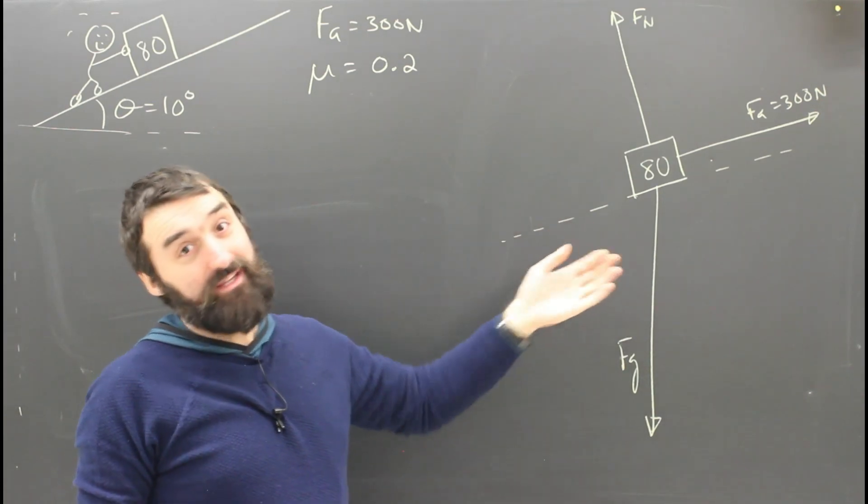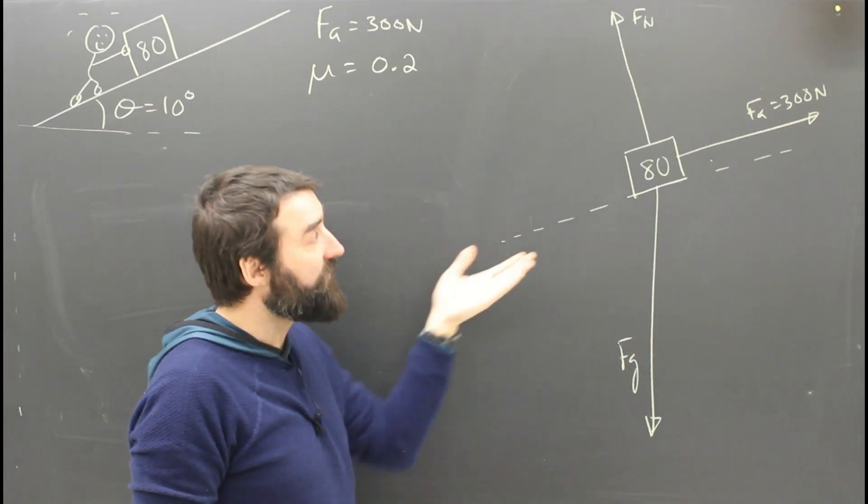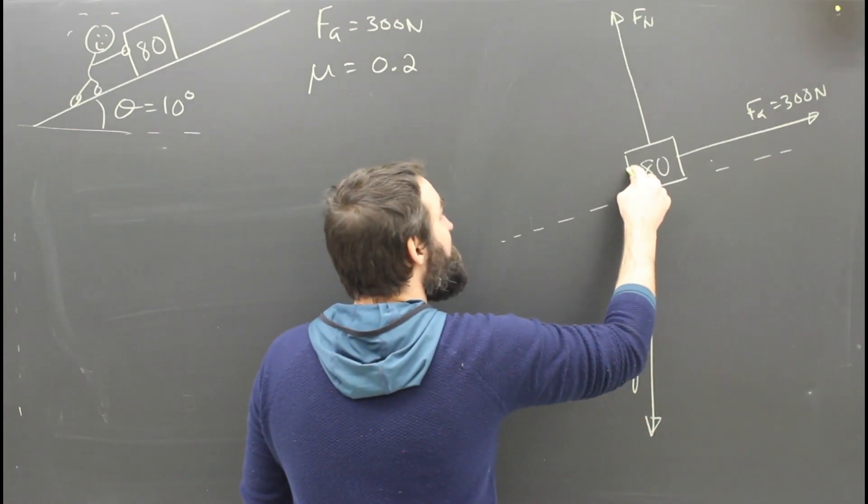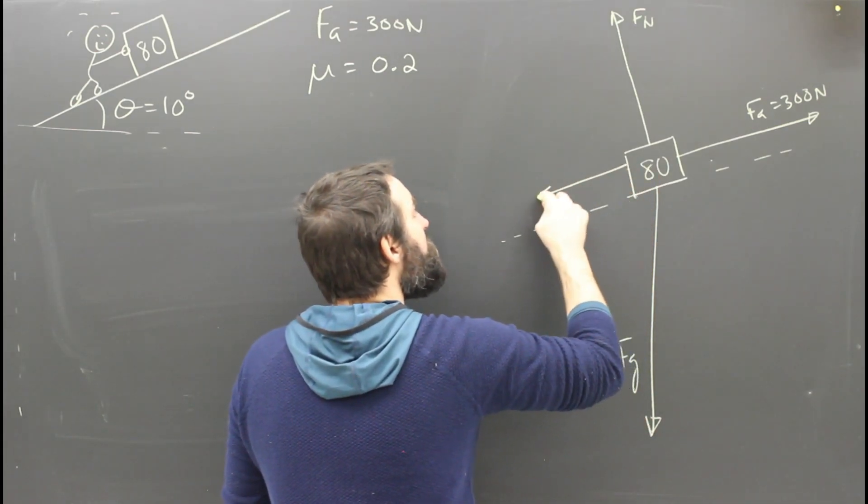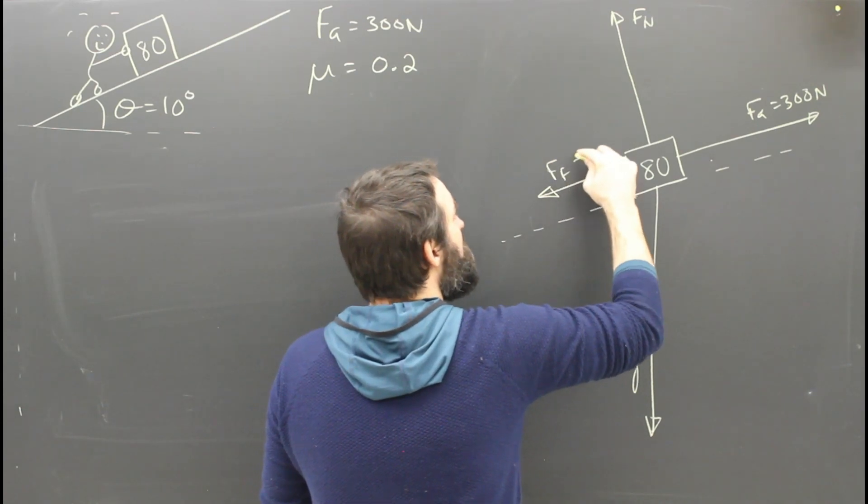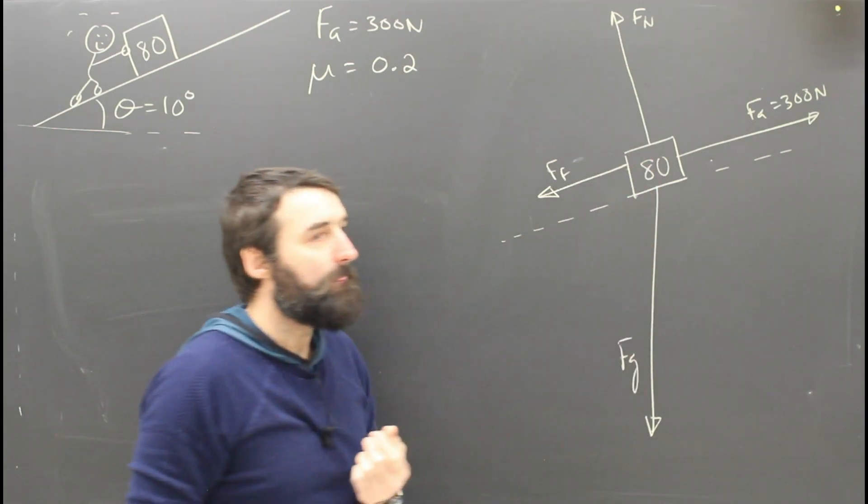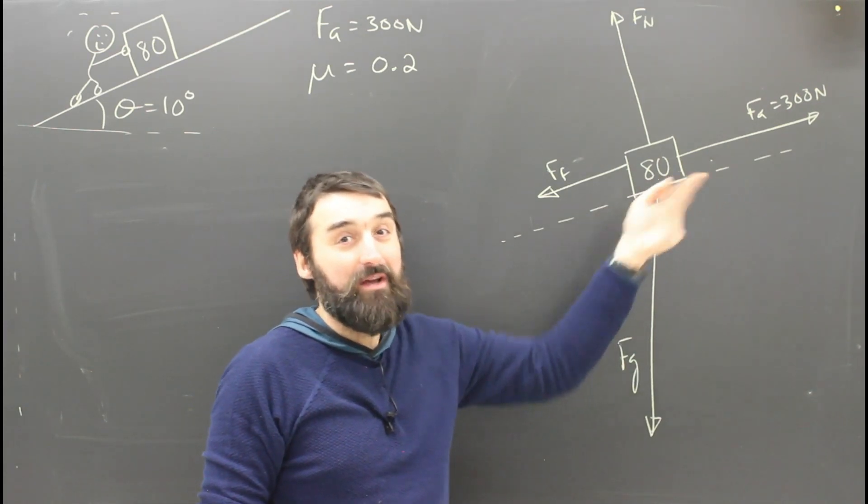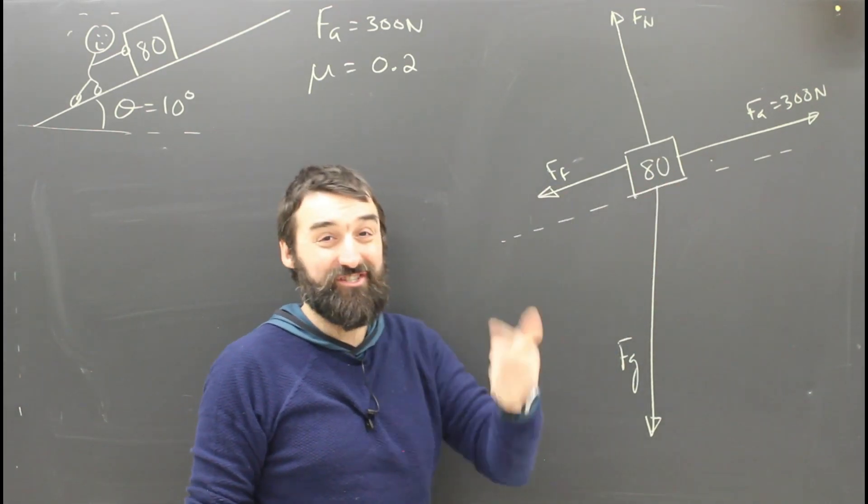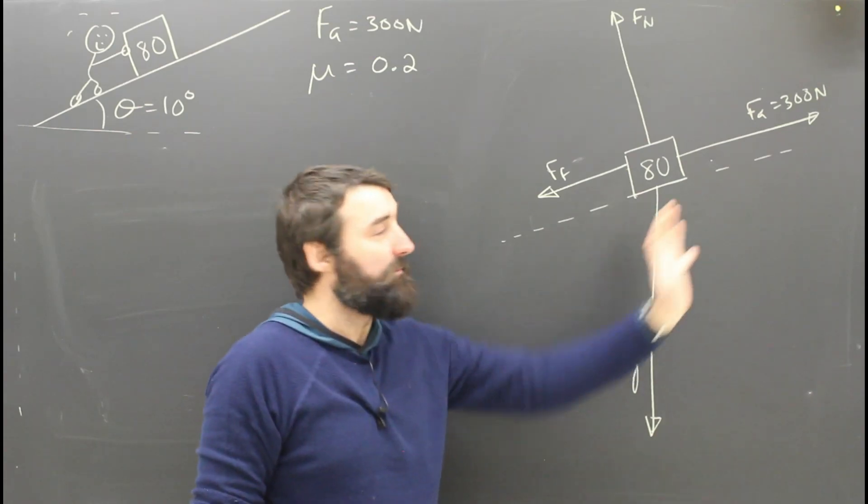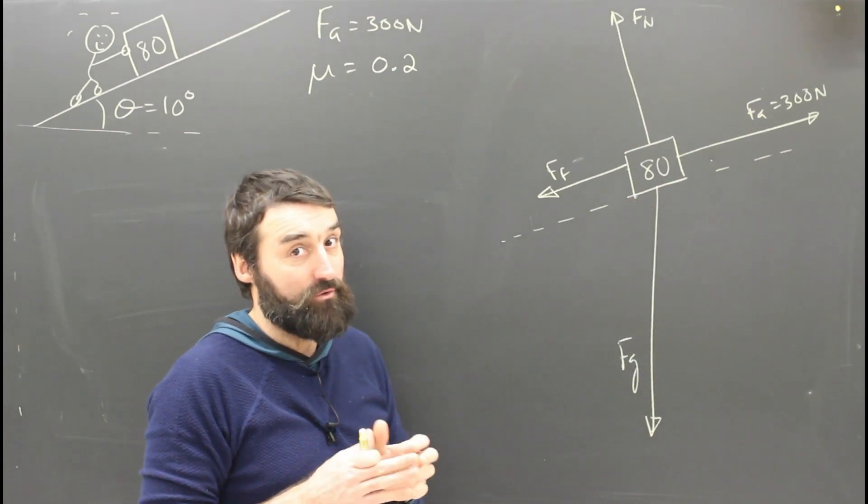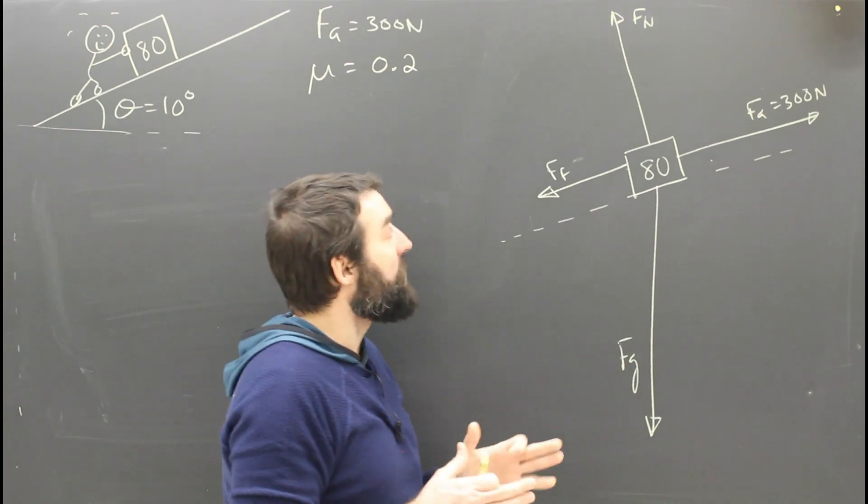And the only question really is, which way is it? The guy is pushing the box up the ramp, so friction has to be down the ramp. But technically, I need to make sure I know which way it's going before I say which way friction's going to be. I know this is being pushed up the ramp, so I know it's going to be down the ramp. But sometimes it's not always totally obvious. We'll talk more about that in a second.